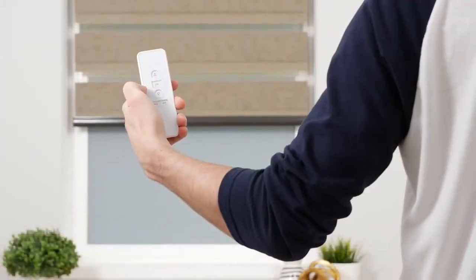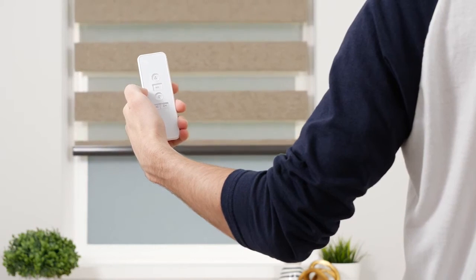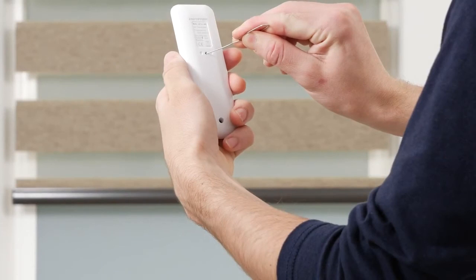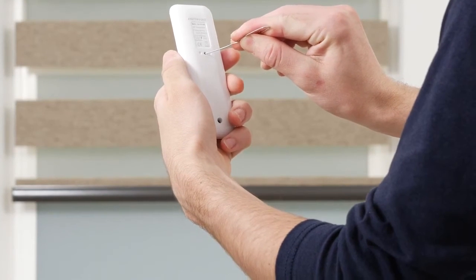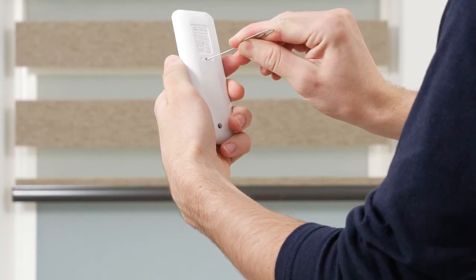To delete an existing favorite, move the shade to the position you want to remove. Then press and hold the program button on the back of the remote for about seven seconds. The shade will jog once before the seven seconds and once after. This confirms that your favorite position has been deleted.